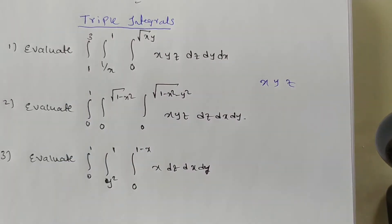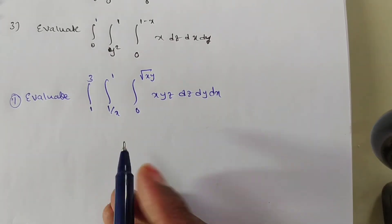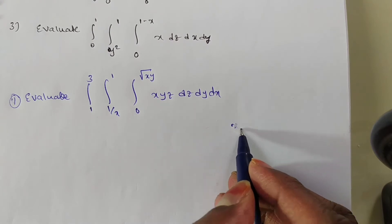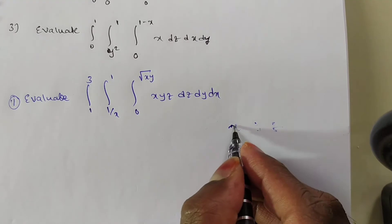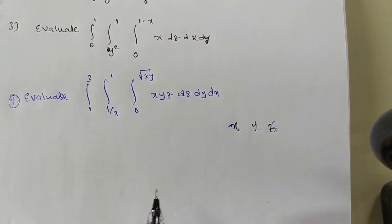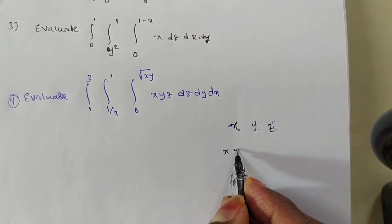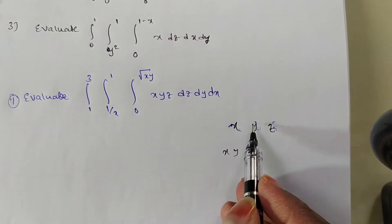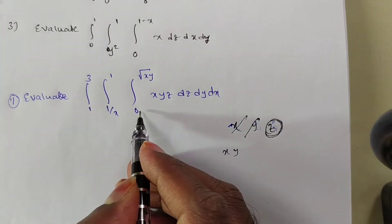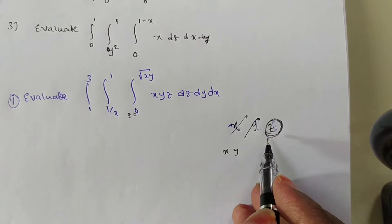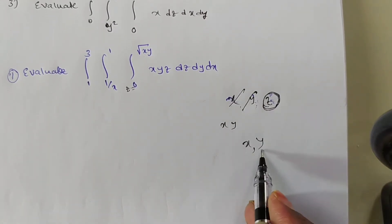Now I am solving the first problem. I want to find the x limit, y limit, z limit. Observe: the limit root x, y is a function of x and y. So remove x and y — obviously z equals root of xy. Now z is completed. Remaining variables are x, y, so we need to find x limit and y limit.